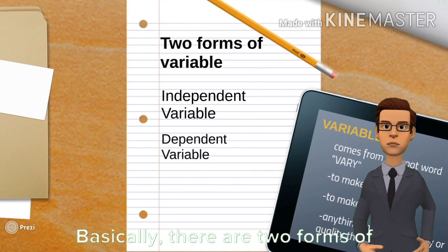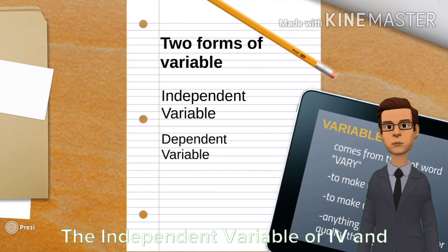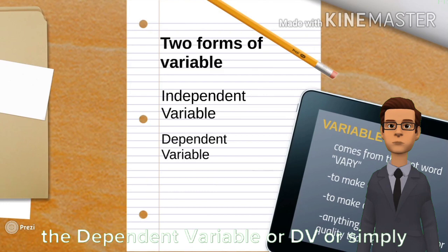Basically, there are two forms of variable: the independent variable, or IV, and the dependent variable, or DV, or simply IV and DV.